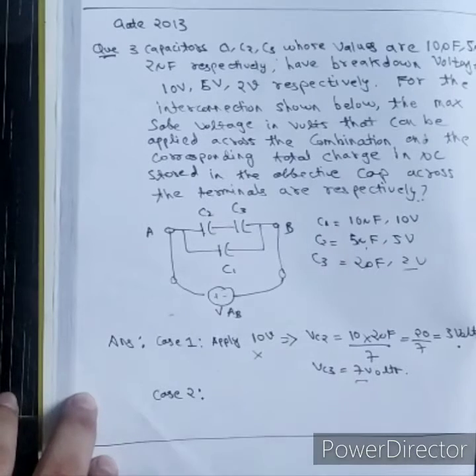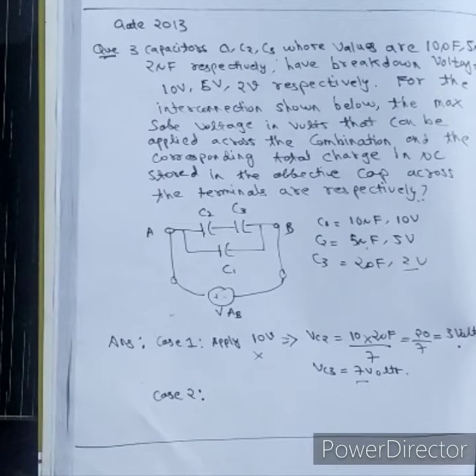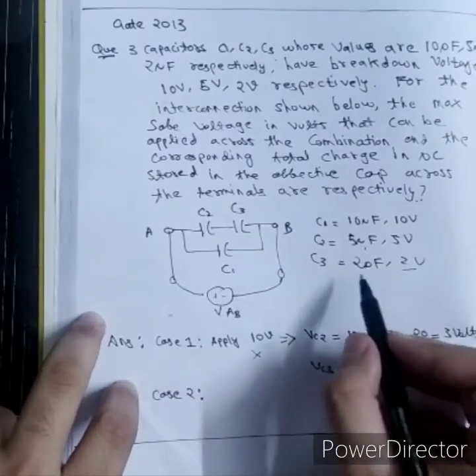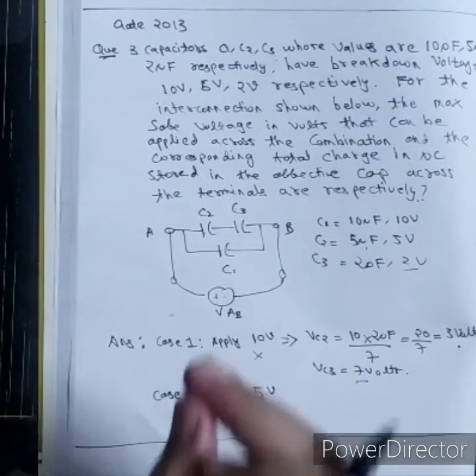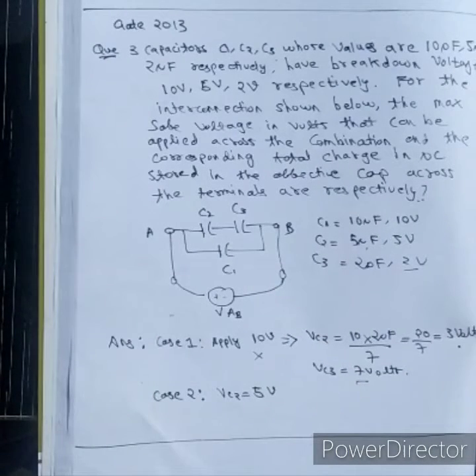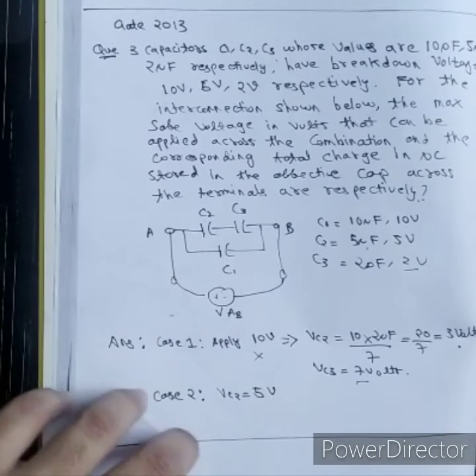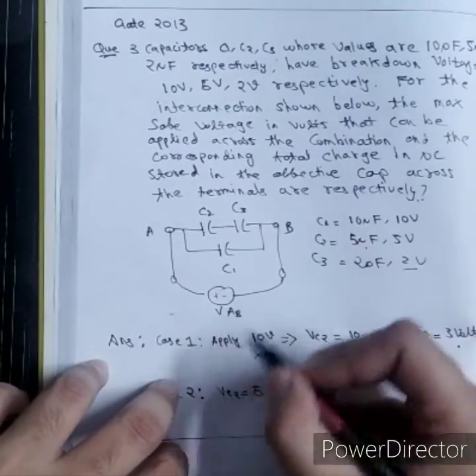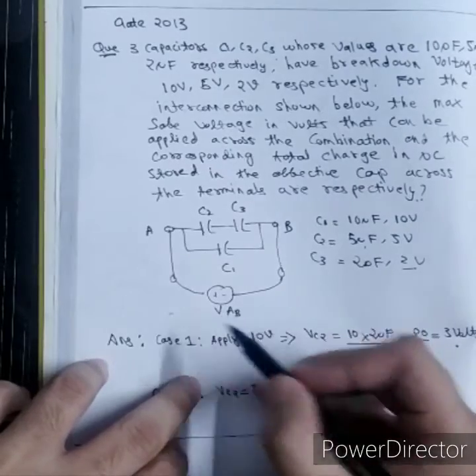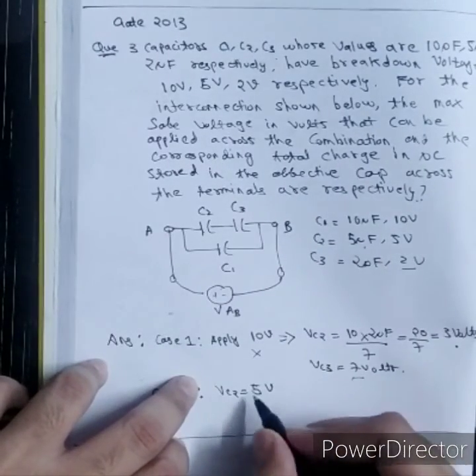Case 2: Now if I consider voltage across C2 as 5V. Consider that I am applying a breakdown voltage of 5V. Even if I apply 5V across C2, my C2 will not go to breakdown. Let's check whether C3 or C1 will go to breakdown if I apply 5V at C2. Let's find VAB first and then using this 5V I can find VAB. This is VC2.